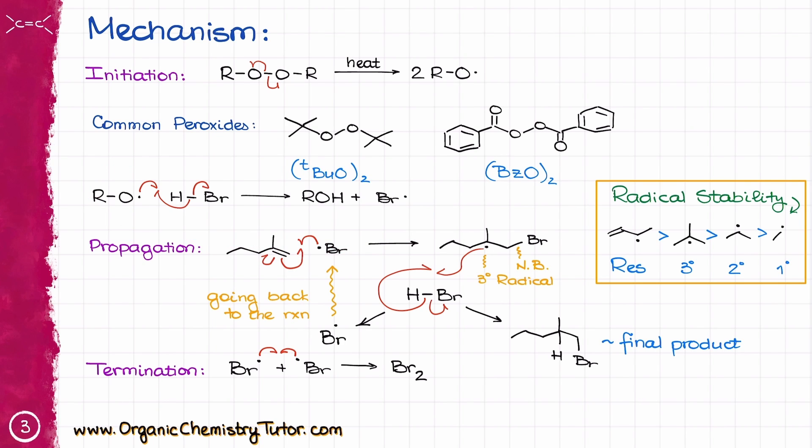In the propagation cycle, we first have our Br radical interact with an alkene, making alkyl radical over here. What's important to remember here is that we're always going to make a more stable radical out of two possible ones. And then our alkyl radical is going to grab a hydrogen from HBr, giving us our final product, and from that point on, we're also going to have Br dot that will feed itself back into the cycle and continue with this reaction. And as I've mentioned, after that we're going to do some random termination step and call it a day.